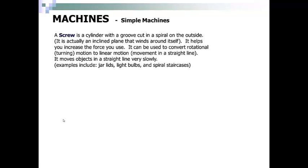A screw is a cylinder with a groove cut into a spiral on the outside. It is actually an inclined plane that winds around itself. It helps you increase the force that you use. It can be used to convert rotational or turning motion into linear motion, or movement in a straight line. It moves objects in a straight way very slowly. Examples include jar lids, light bulbs, and spiral staircases. Here is an example of a screw, and this is what we would traditionally call a screw in building.